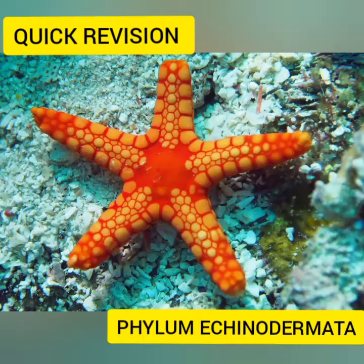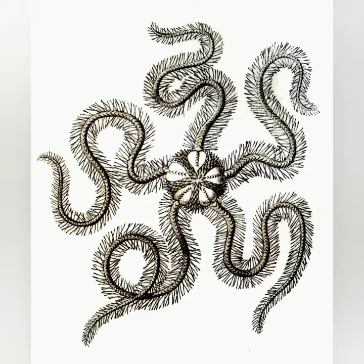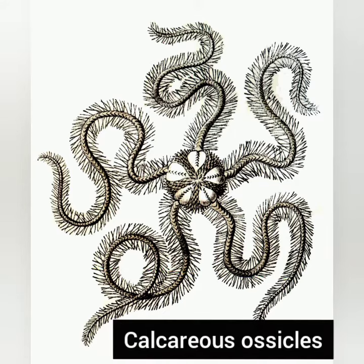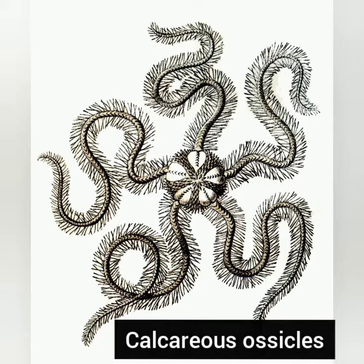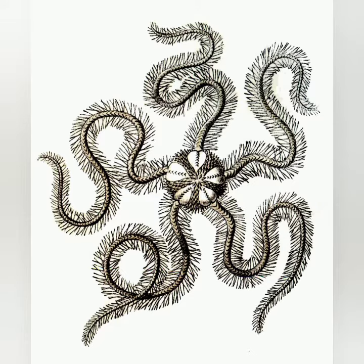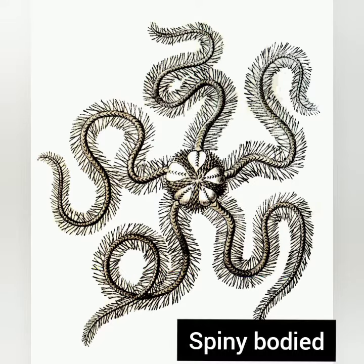Hello friends, welcome back to another quick revision video. In this session we are going to deal with the topic phylum Echinodermata. These animals have an endoskeleton of calcareous ossicles, and hence the name Echinodermata, which means spiny bodied.